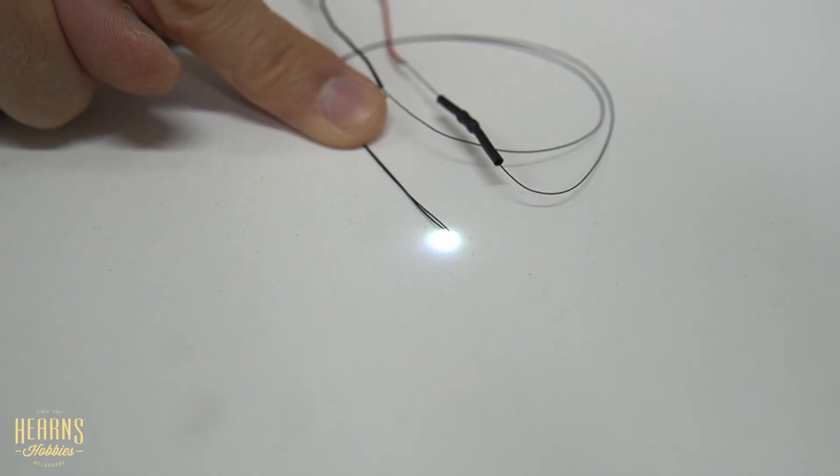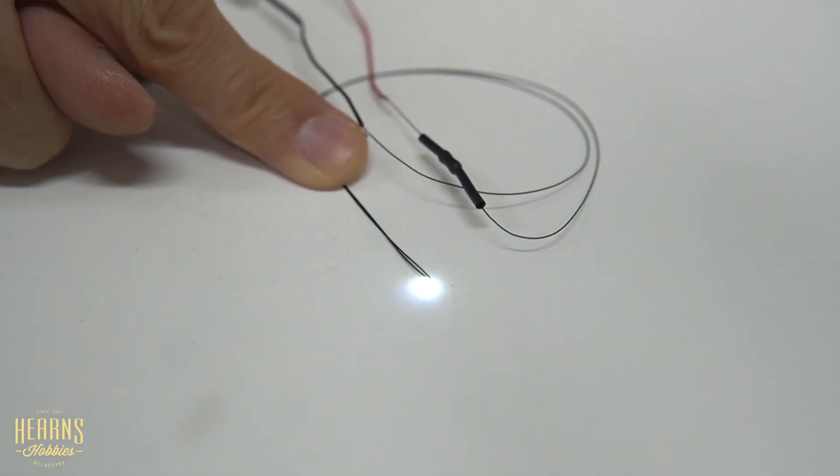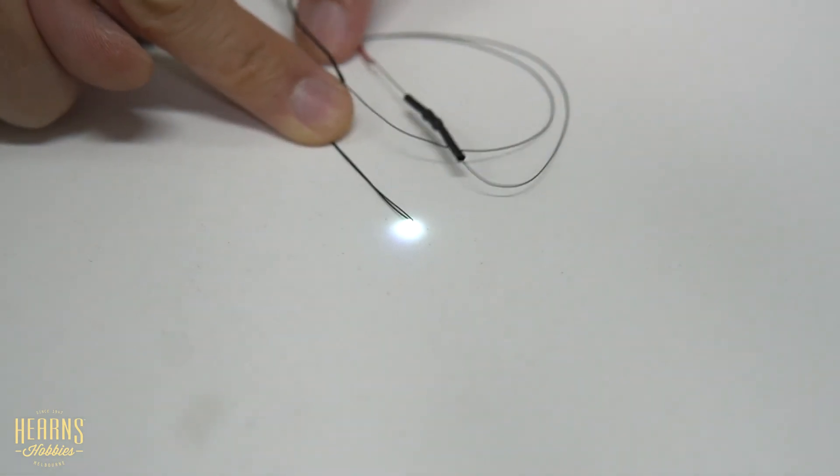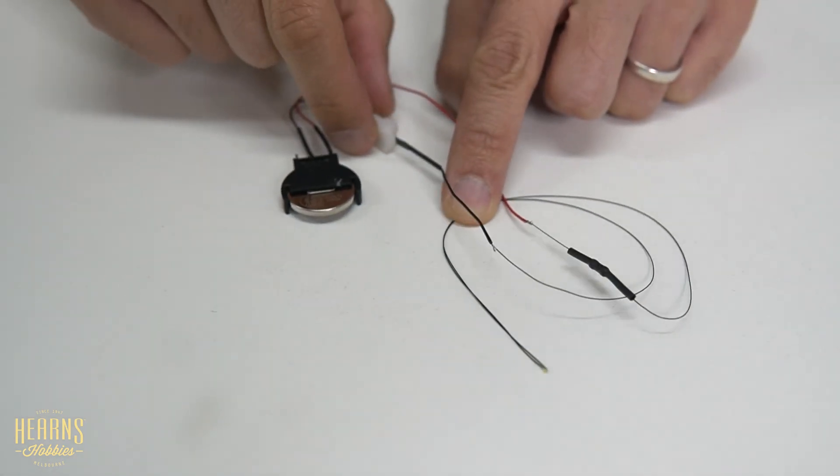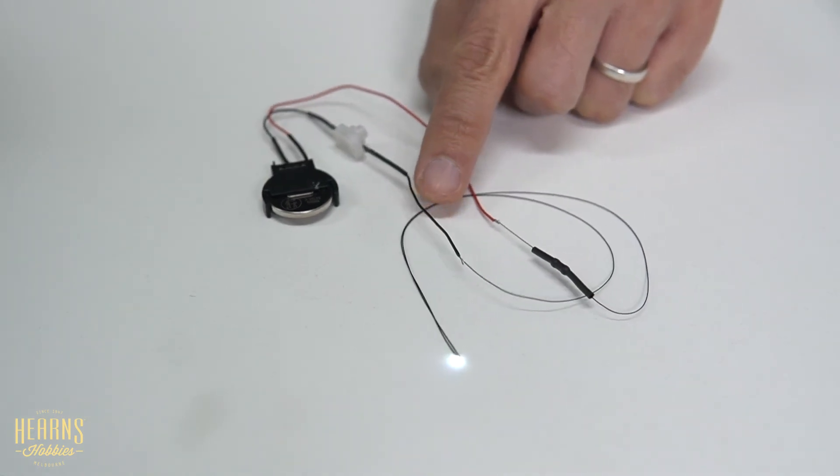There's your little LED, all lit up. Tiny 1mm LED. If you want a bit more light, you can get the 2mm ones as well, and you can get it in a variety of different colors. That's on, just press this, it's off. On again. Simple.